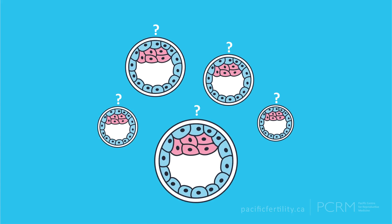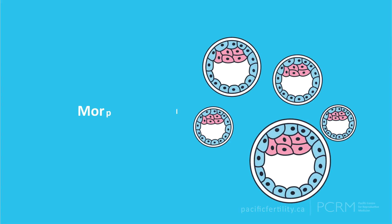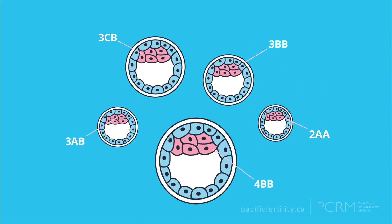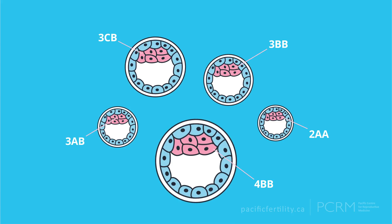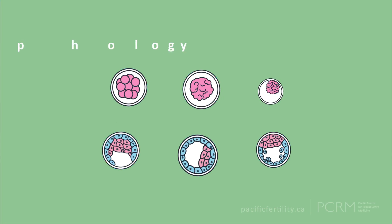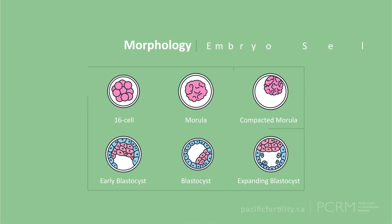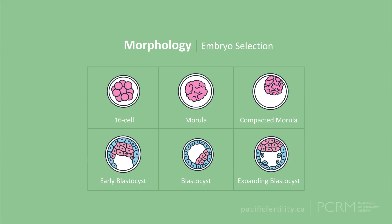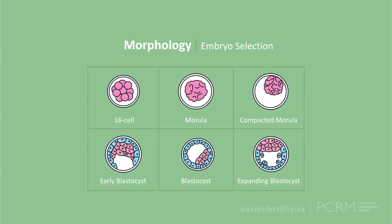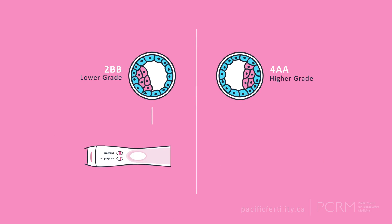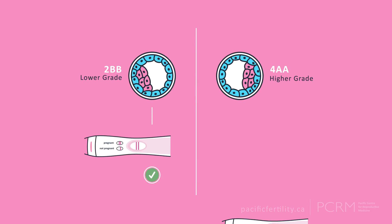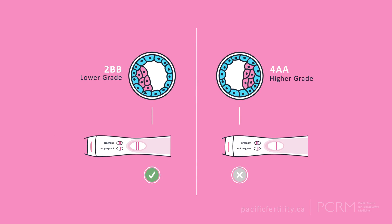Traditionally, the embryologist uses morphology — the size and appearance of the embryo — to determine which embryos are suitable for transfer and freezing. Using morphology for embryo selection is not harmful to the embryo and carries no additional cost. However, morphology is subjective. An embryo with a lower grade may still result in pregnancy, and a high-grade embryo may not.